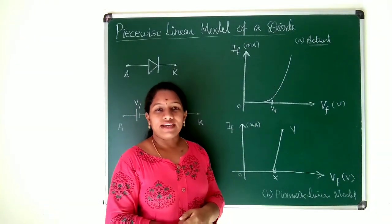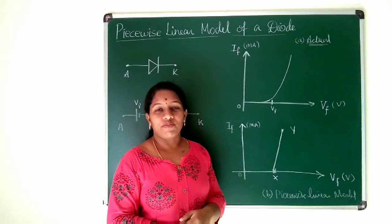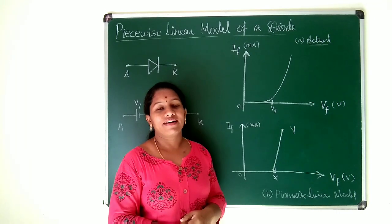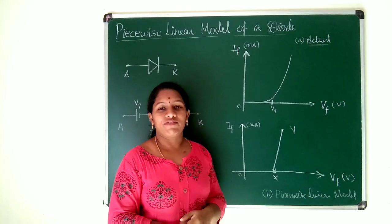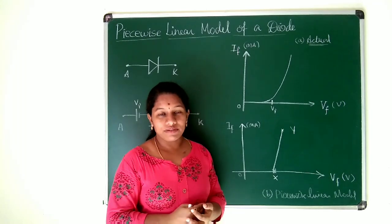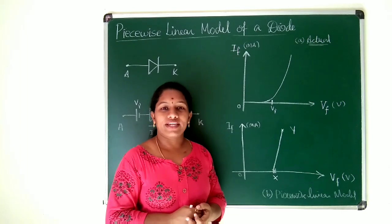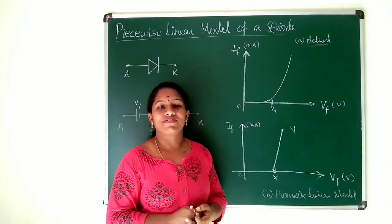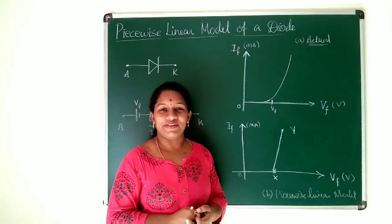That's why we call it piecewise linear model approximation for a diode. Formally, this is a straight-line approximation model for the output characteristics of a diode—the piecewise linear model of a diode.